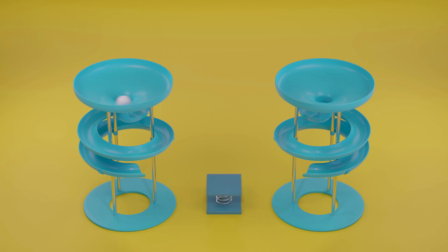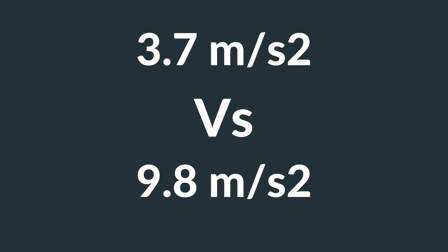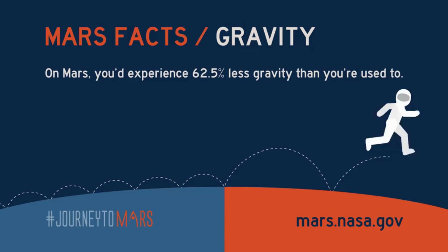This difference in mass has a direct effect on gravity. The gravity on Mars is 3.7 meters per second squared, while on Earth it's 9.8 meters per second squared. So on Mars you will experience 62.5 percent less gravity compared to Earth.